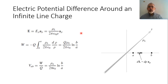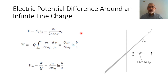Another important configuration whose capacitance we are interested to derive is a two-parallel cylindrical structure. This geometry is important in parallel wire transmission lines. Before we study the capacitance of these two parallel cylindrical structures, we first want to review the electric potential due to an infinite line charge.